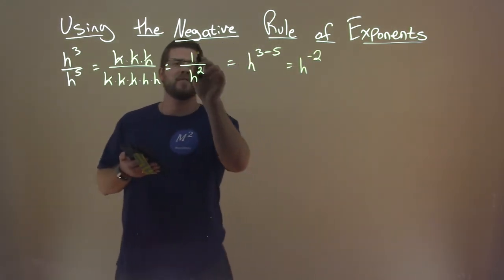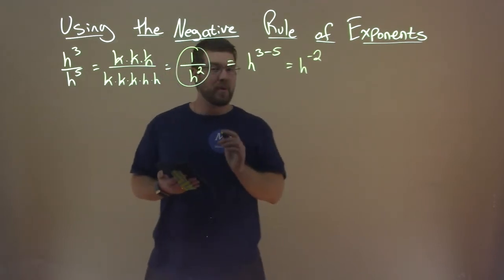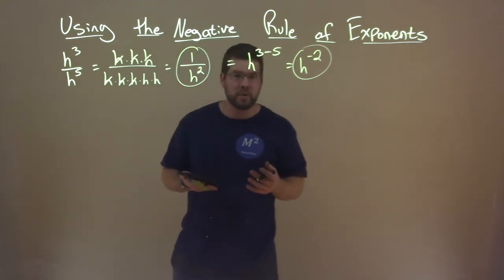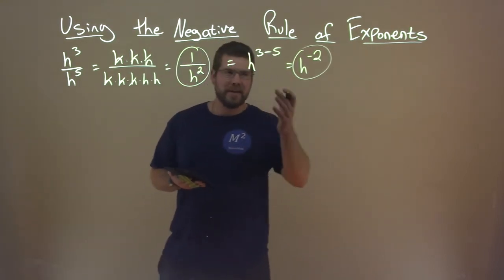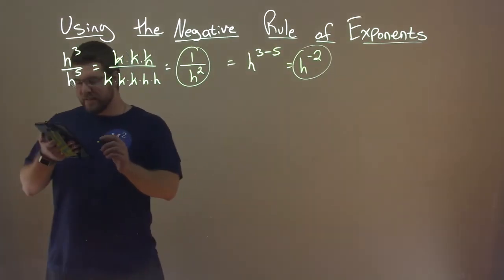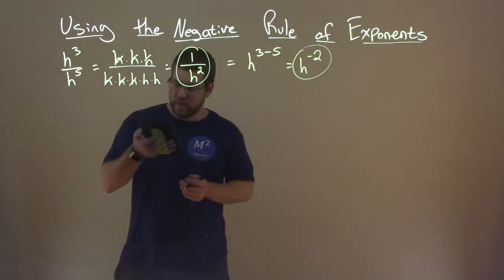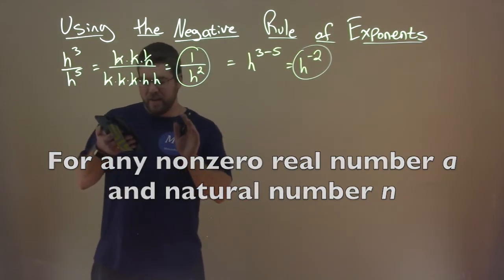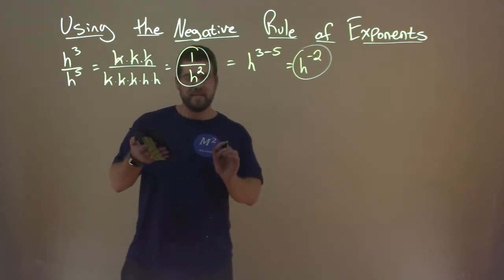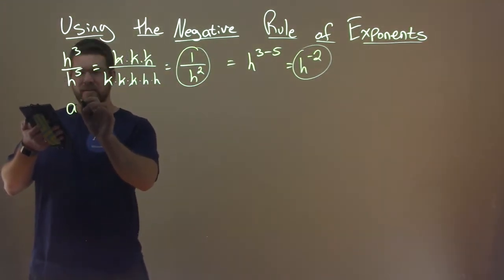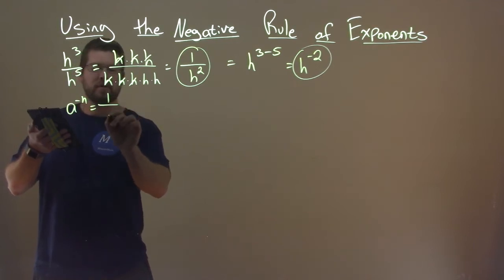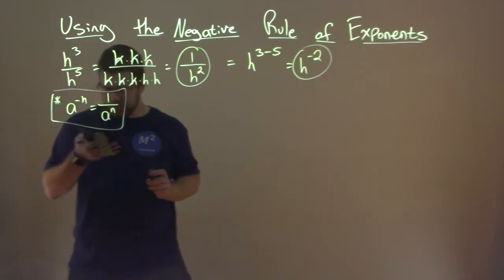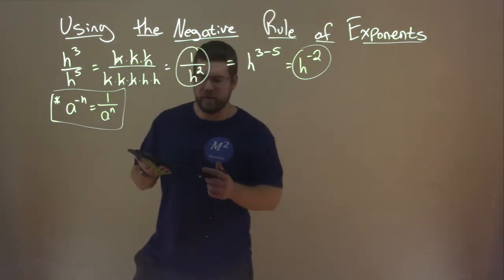So one thing we see here is that 1 over h squared is equal to h to the negative 2. And there we have our rule. The negative rule of exponents states that for any non-zero real number a and natural number n, a to the negative n is equal to 1 over a to the n. So let's go through some examples.